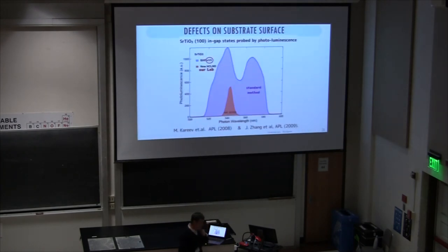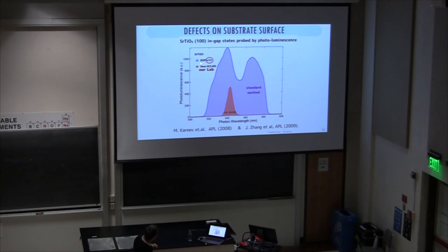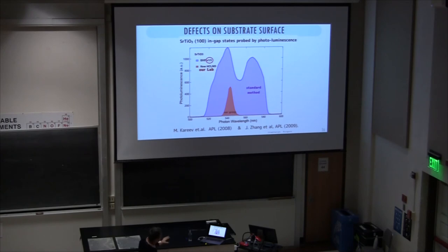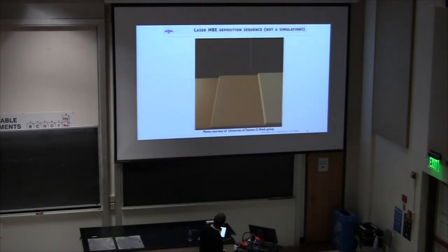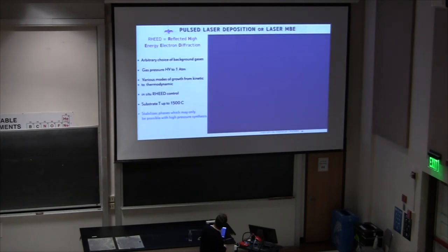Defects are very important. When you treat your substrate with chemistry — typically buffered hydrofluoric acid — the photoluminescence of the substrate shows what happens: the signal reveals the number of defects produced in the substrate before growth. We developed a new method for doing that — it's actually scaled by one-third compared to standard methods, so it's much larger in scale — but the substrate is still loaded with electronic defects for many reasons.